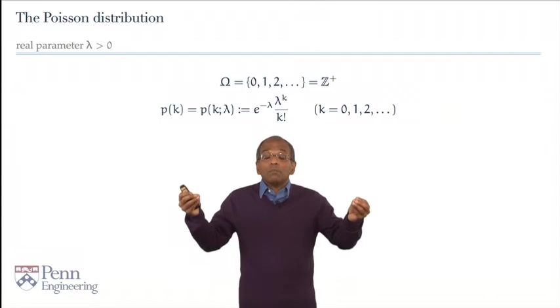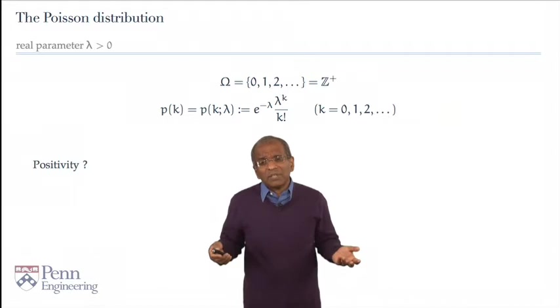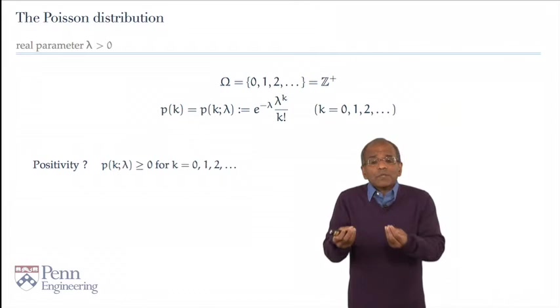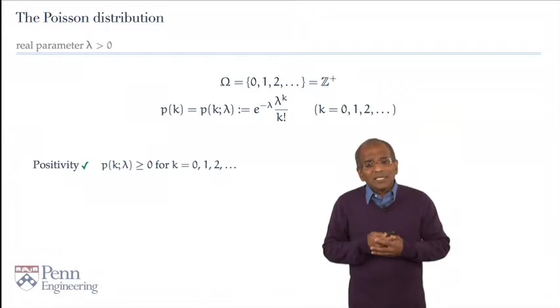Now, this looks like a more complex form. Now, we have not just a finite number of atomic probabilities, but an infinite number of them, albeit a countable infinity. Naturally, we want to check positivity. And again, we say that this is trite. The exponential function is always positive. Powers of a positive number are positive, the factorial is positive, and therefore, the Poisson probabilities are positive, and therefore, positivity is trite.